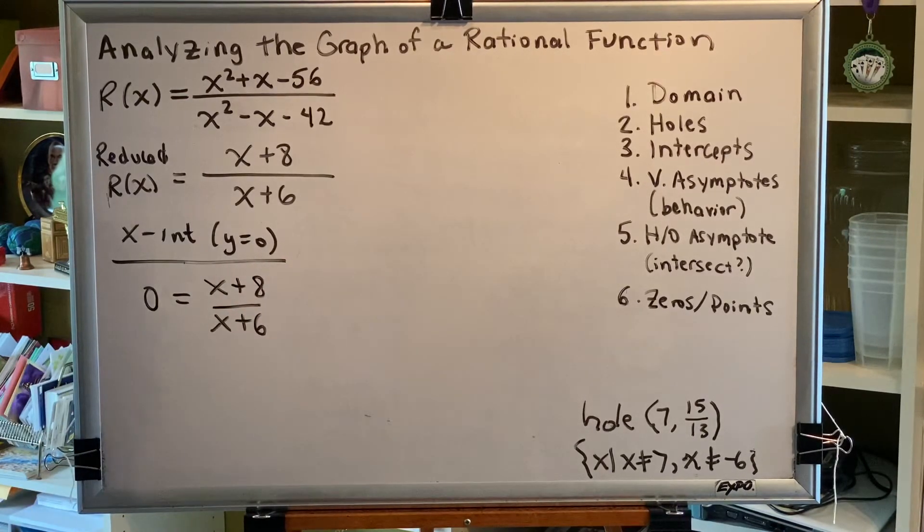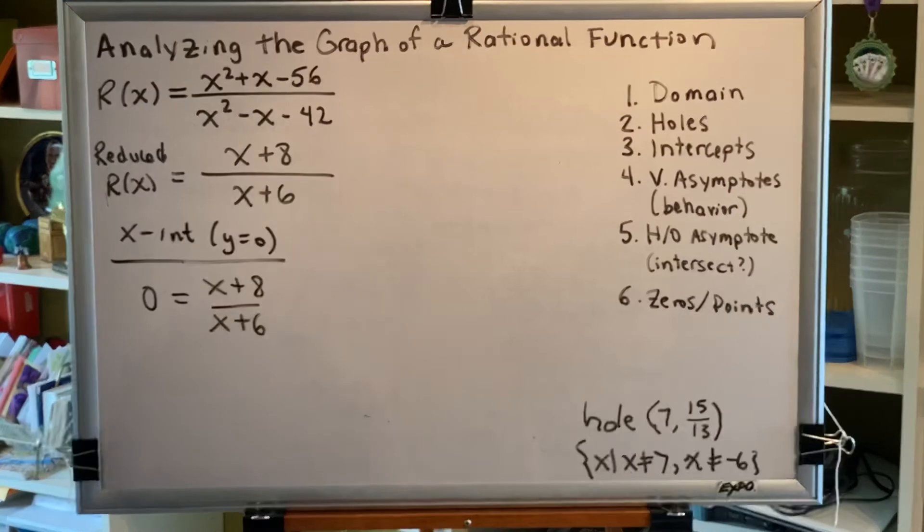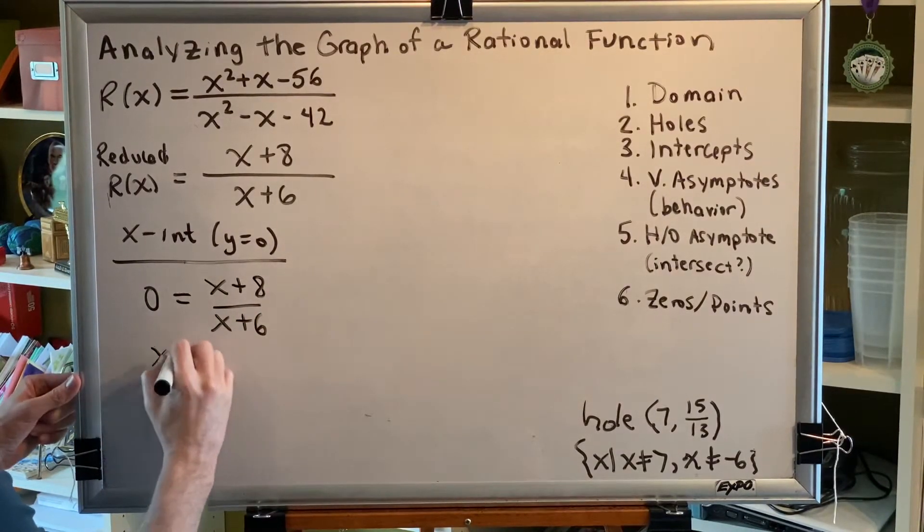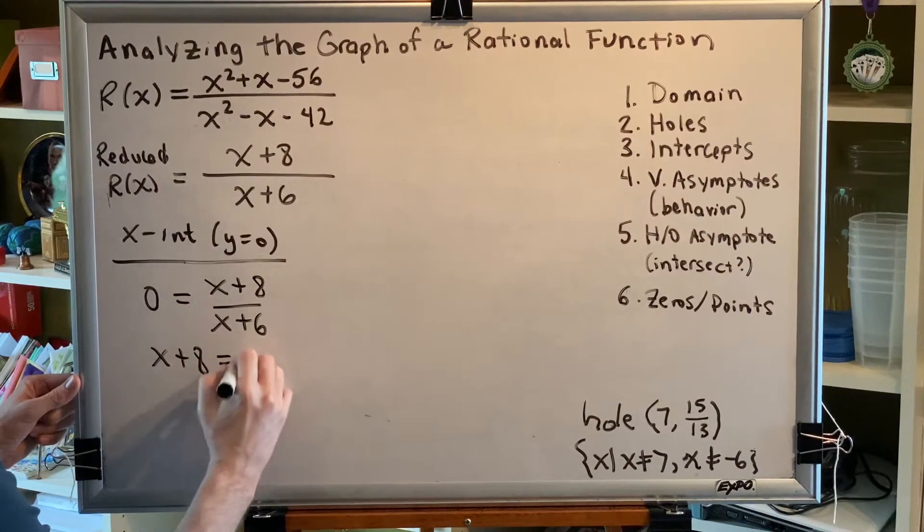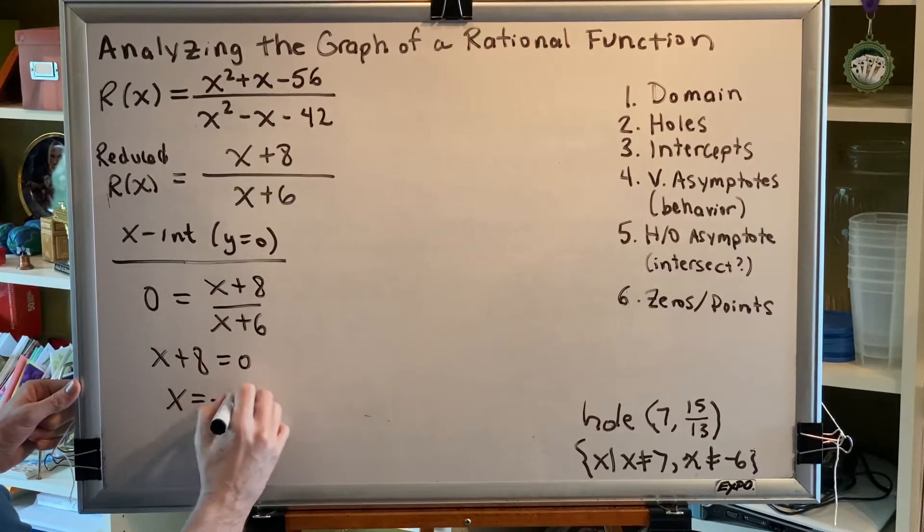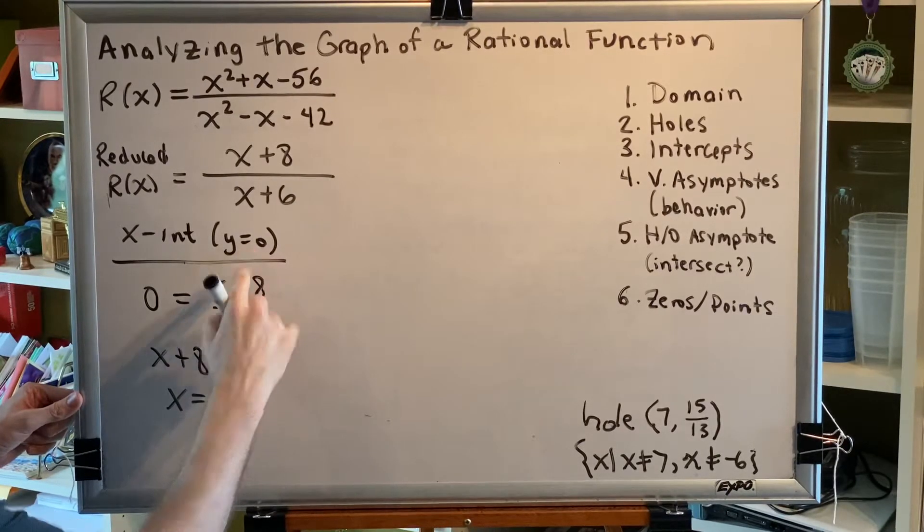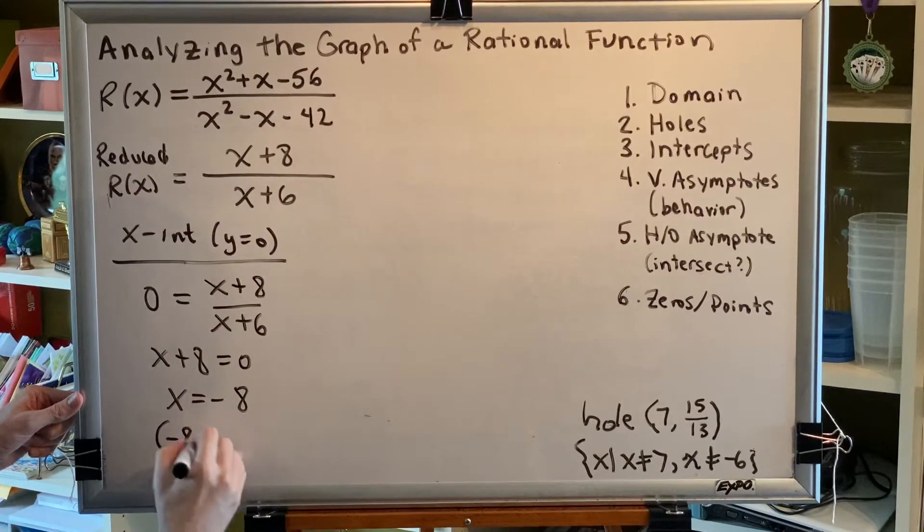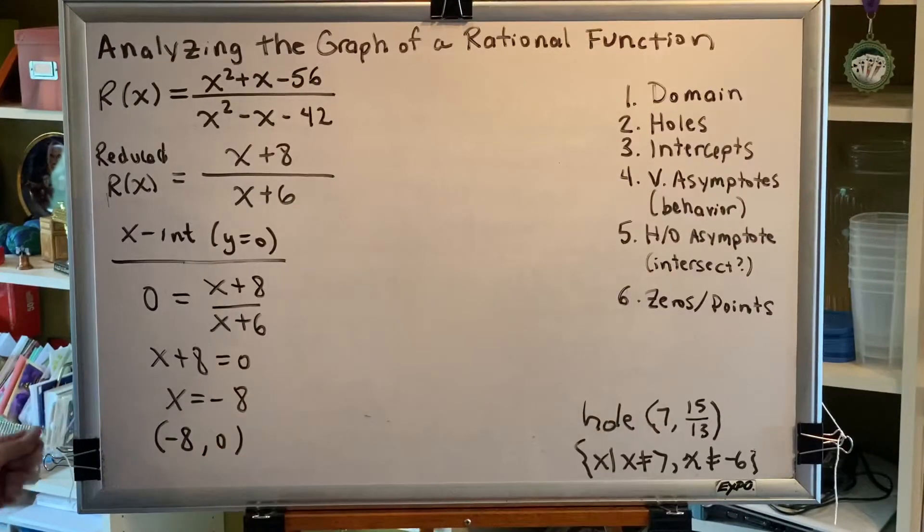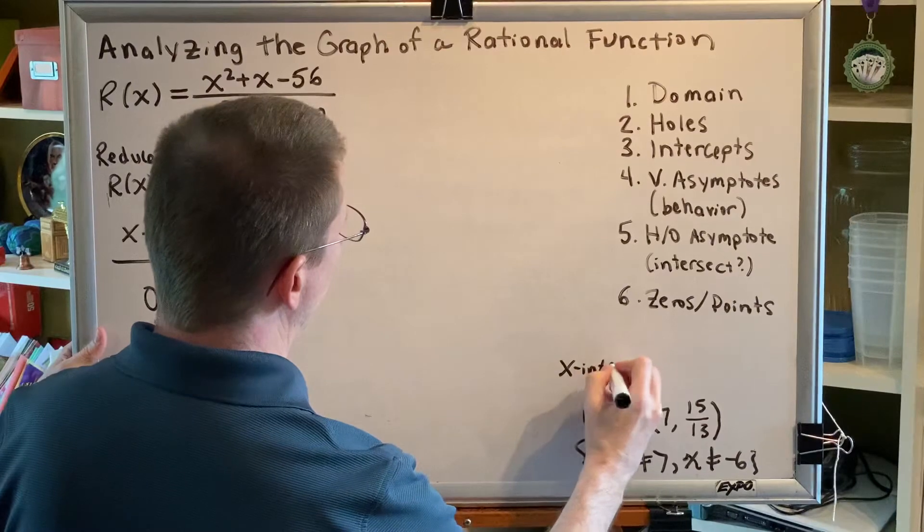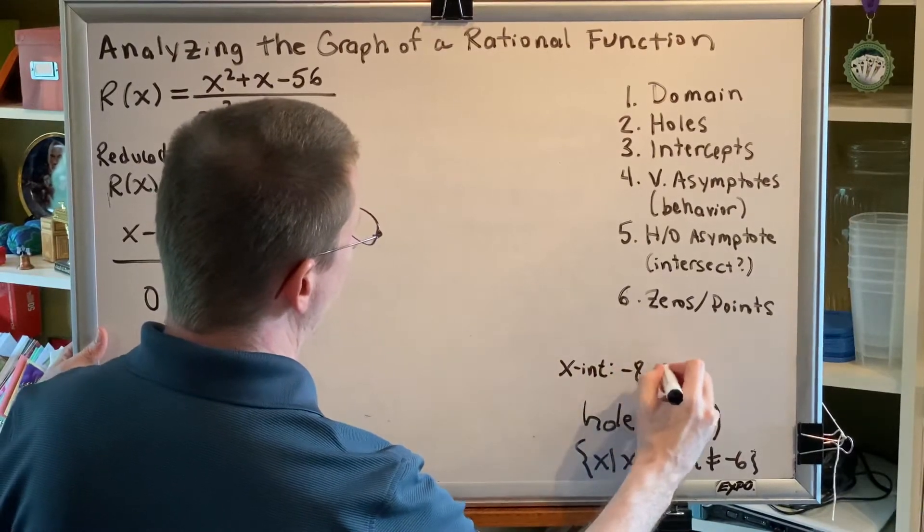Now one property of fractions is the only way a fraction ever equals 0 is if its numerator equals 0. So from this, we get x plus 8 equals 0, and therefore x equals negative 8. We're looking for x-intercepts which have a y of 0, so that means our x-intercept is negative 8 comma 0.